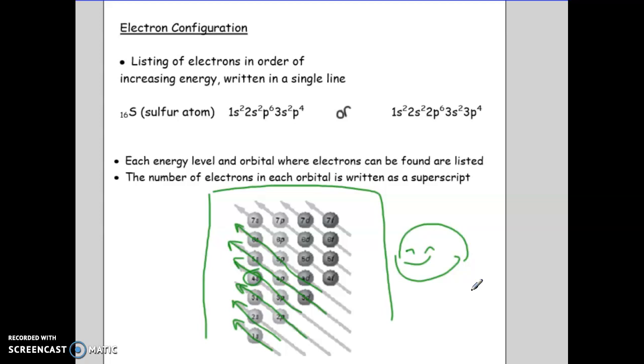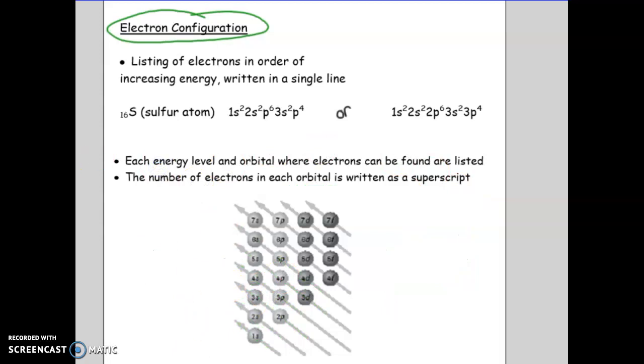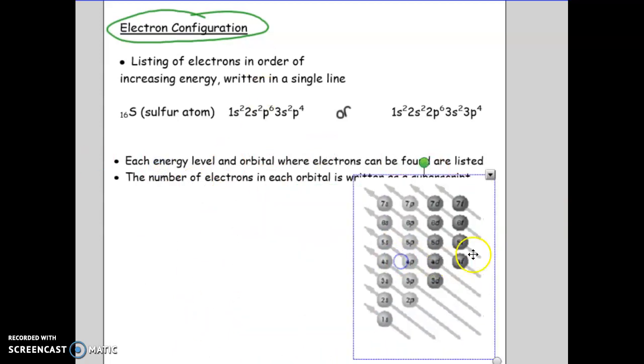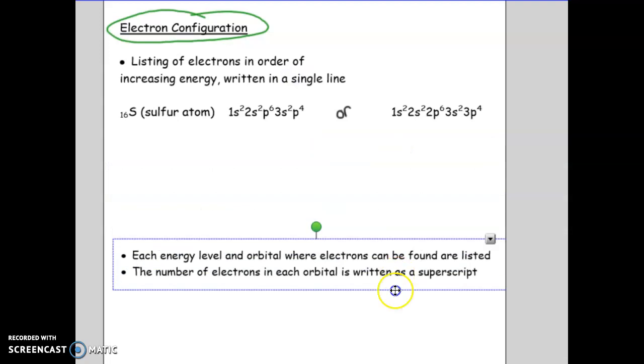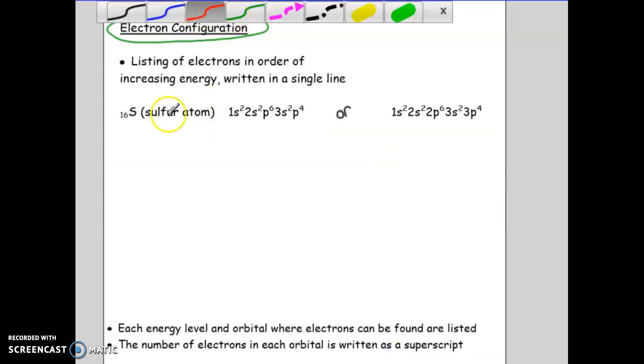Okay, so the next piece to this, we looked at energy level diagrams. The next thing is something called an electron configuration, which is basically a condensed way of, instead of drawing out all the orbitals and all the little arrows for your electrons, it's a way of just writing out the order that those electrons would be placed in. So for example, sulfur. Let me get rid of this. We are going to shift this down out of the way.